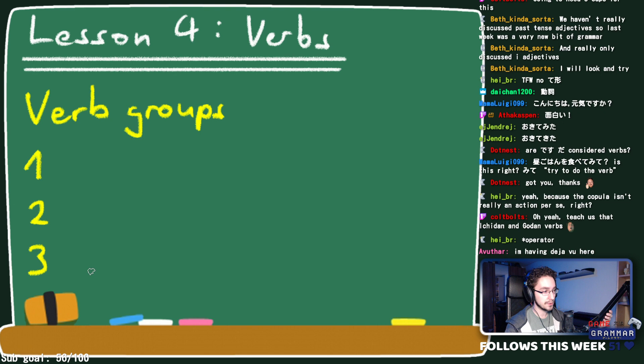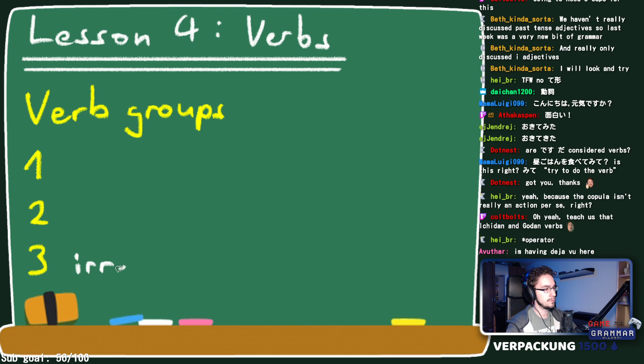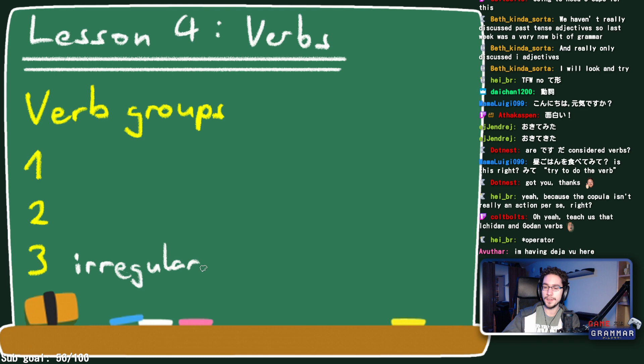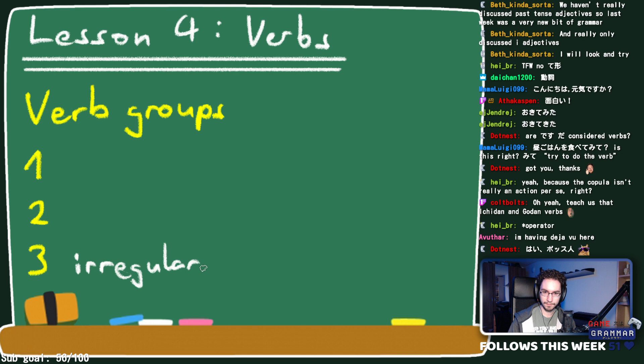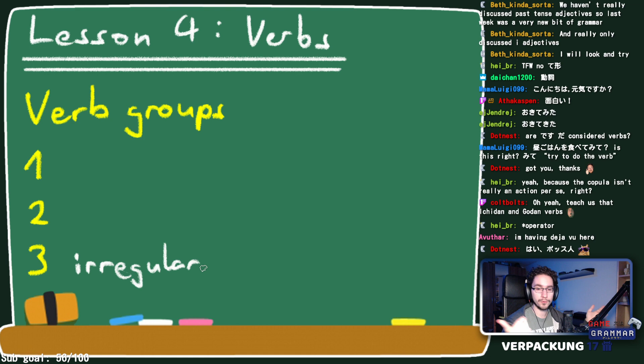Let's start with group number three, which may sound a little strange, but most textbooks call this similarly. Group number three is basically just the irregulars. It's like a bucket for things that don't fit in the other two groups. Luckily, there are only two irregular verbs in Japanese.